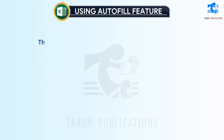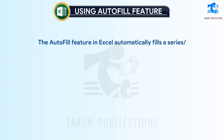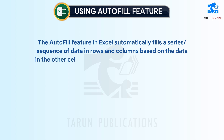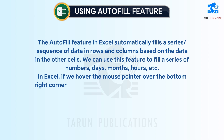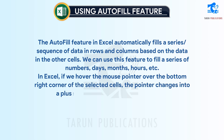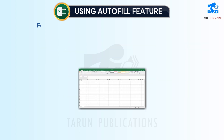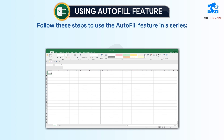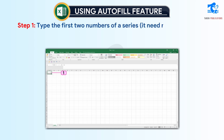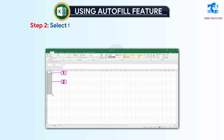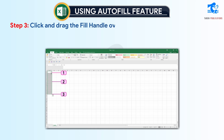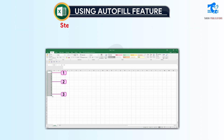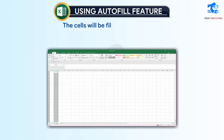Using the Autofill feature. The Autofill feature in Excel automatically fills a series or sequence of data in rows and columns based on the data in the other cells. We can use this feature to fill a series of numbers, days, months, hours, etc. If we hover the mouse pointer over the bottom right corner of the selected cells, the pointer changes into a plus sign called a fill handle. Step 1: Type the first two numbers of a series — it need not start from 1. Step 2: Select the cells and move the pointer over the bottom right corner of the selection. Step 3: Click and drag the fill handle over the cells that you want to autofill. Step 4: Release the mouse button. The cells will be filled with the series.